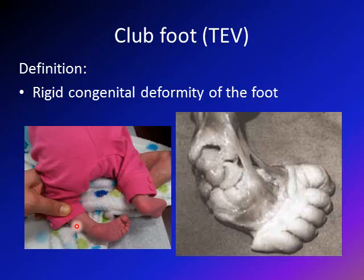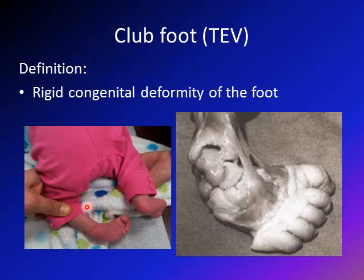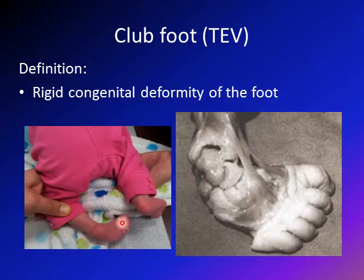This is a child who has a left Talipes equinovarus or clubfoot deformity. In brief, the hindfoot is varus, there is equinus of the ankle, and the forefoot has adduction — it's tilted inward.